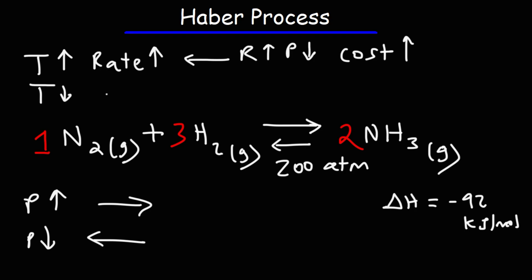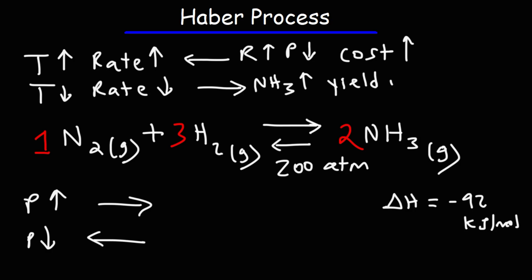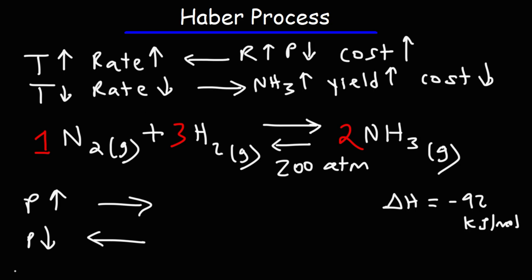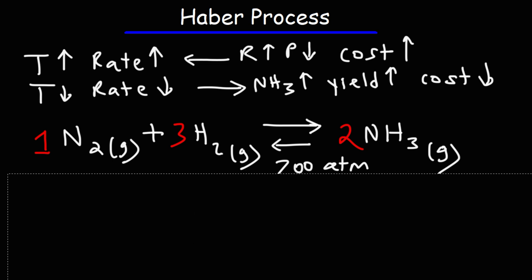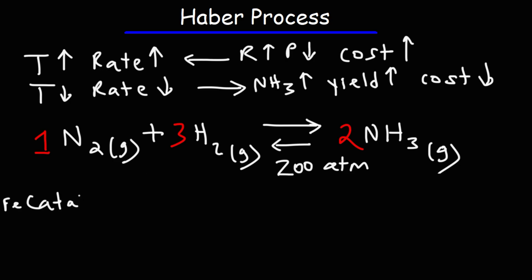If you decrease the temperature, the problem is that the rate of the reaction is going to slow down. The good thing is that it's going to shift to the right, favoring the formation of ammonia, so the yield goes up and the cost goes down. The problem is just that if the temperature is too low, the reaction will be too slow. One good way to get around that is the use of a catalyst. When we introduce the iron-based catalyst, it will increase the rate of the reaction, which compensates for the relatively low temperature.